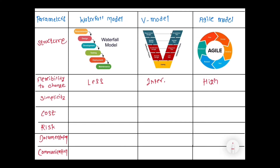The third parameter is simplicity. The structure of the waterfall model is very simple, that's why this model is called a highly simple model. V model is intermediately simple, whereas agile model is very complex, so we can't call it a simple model.